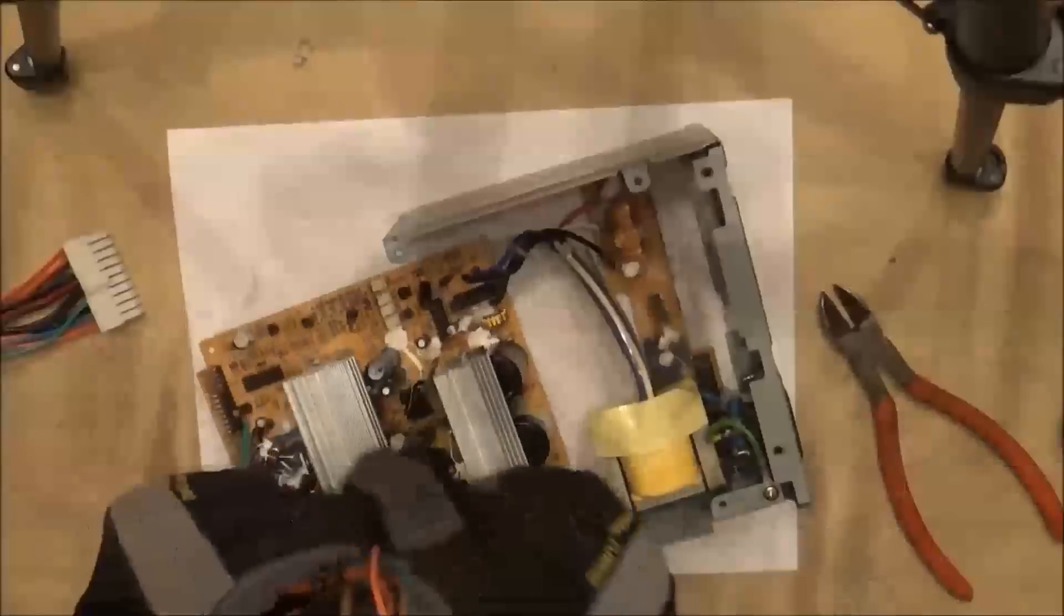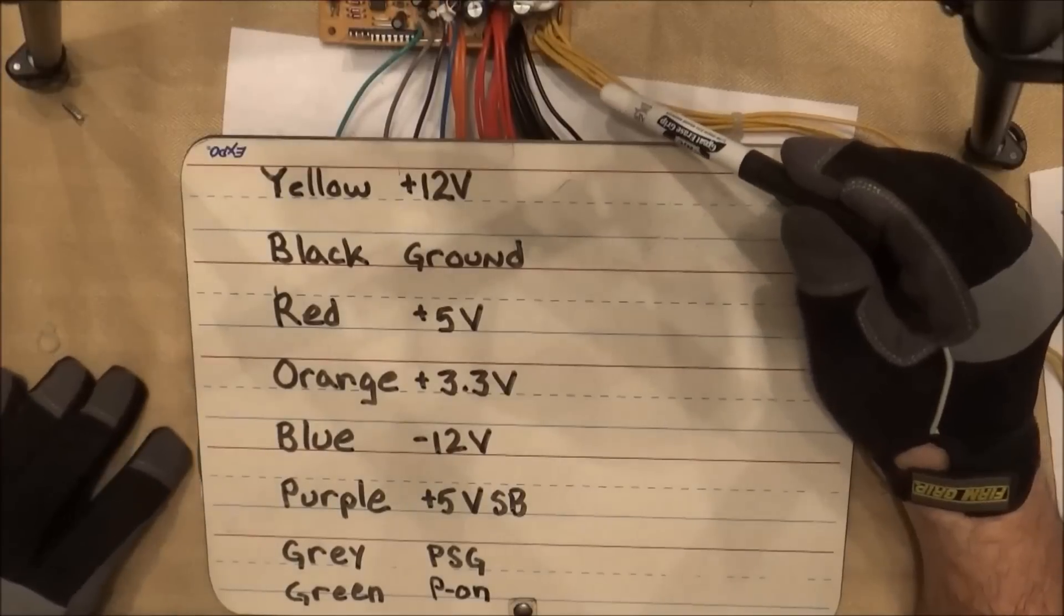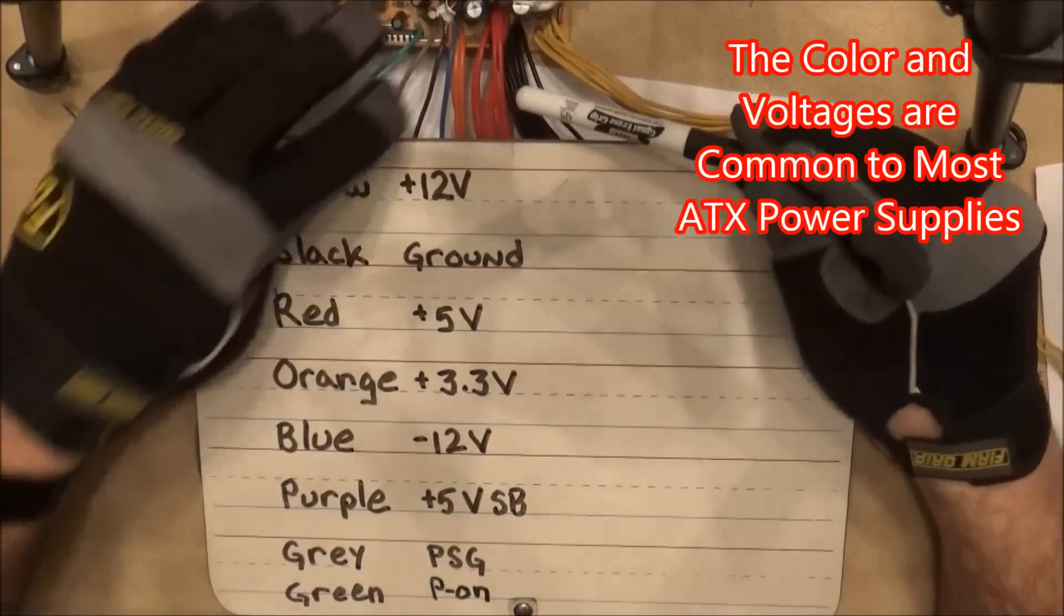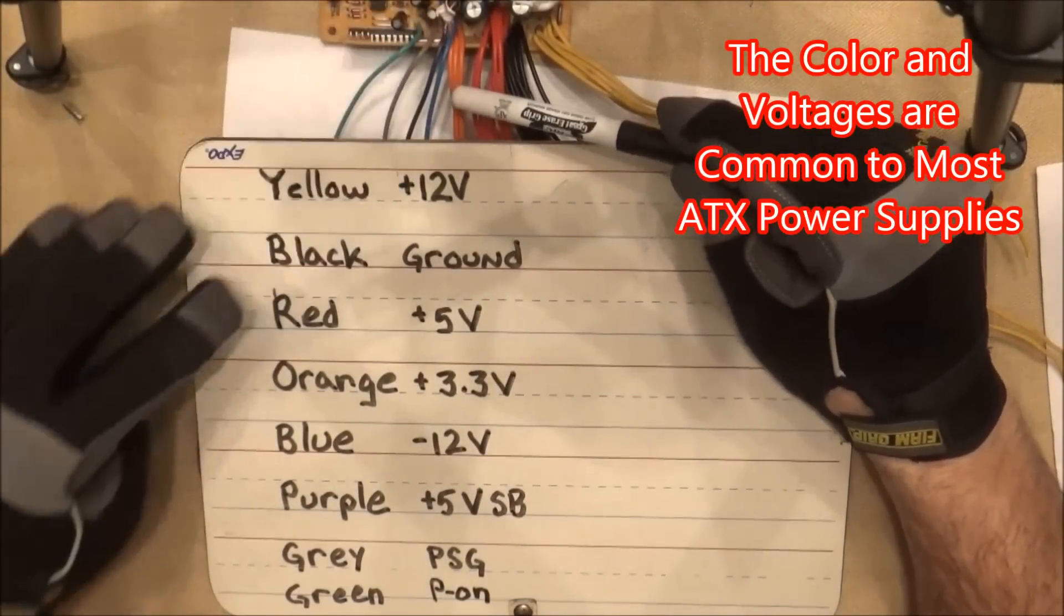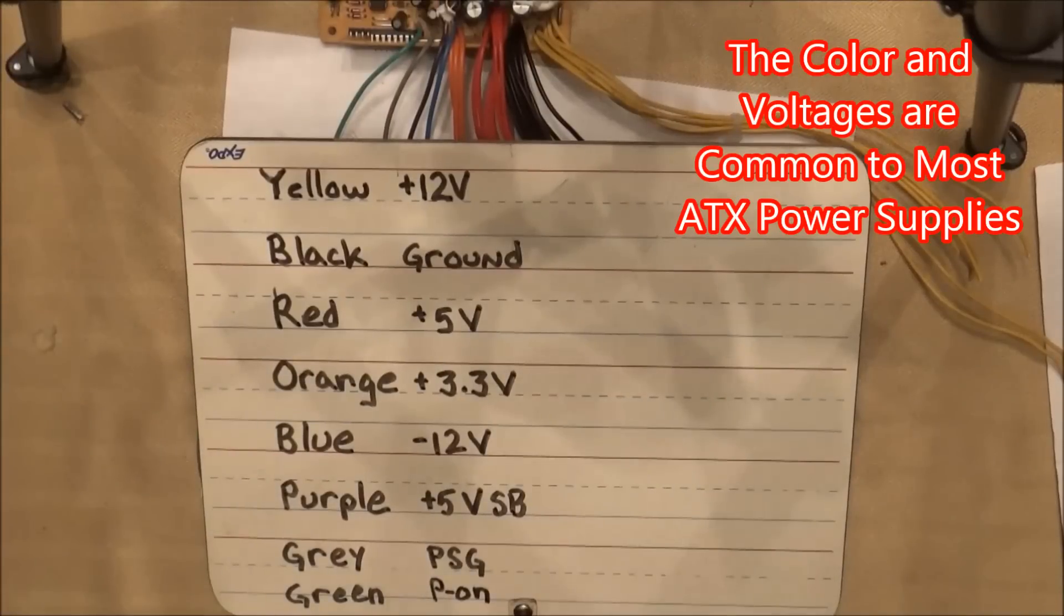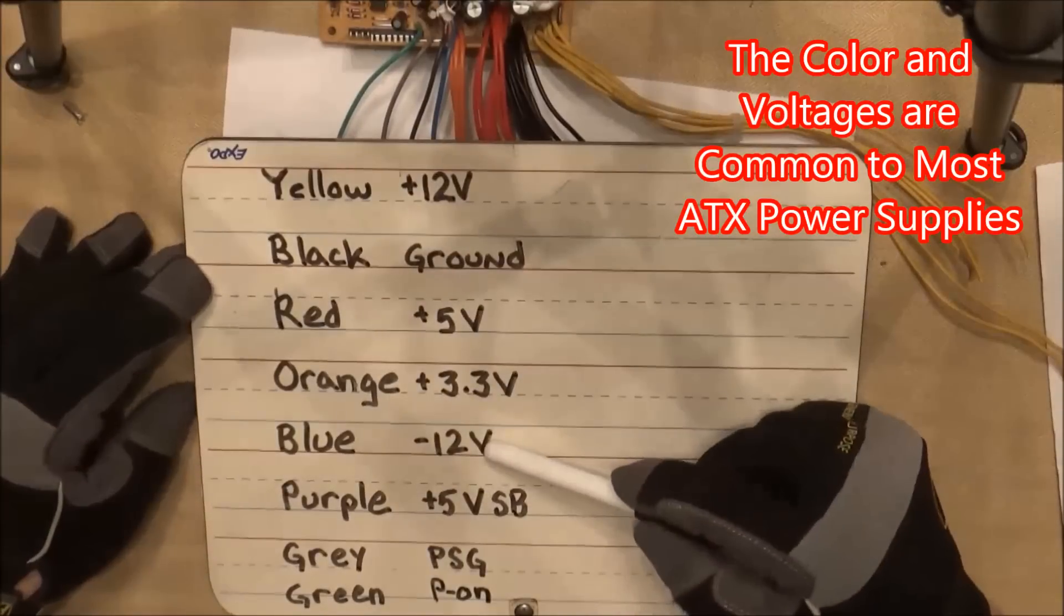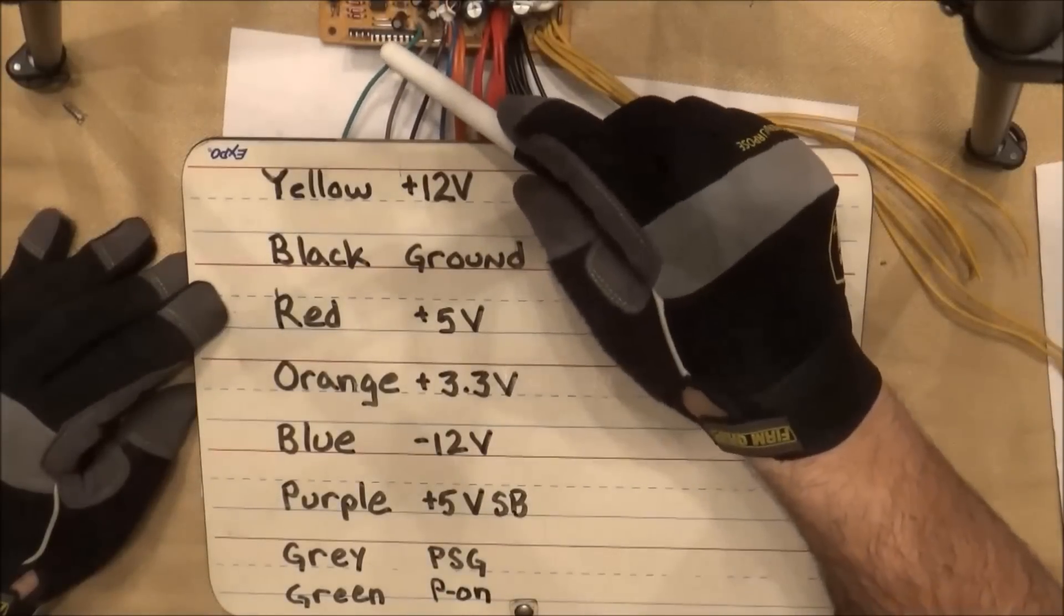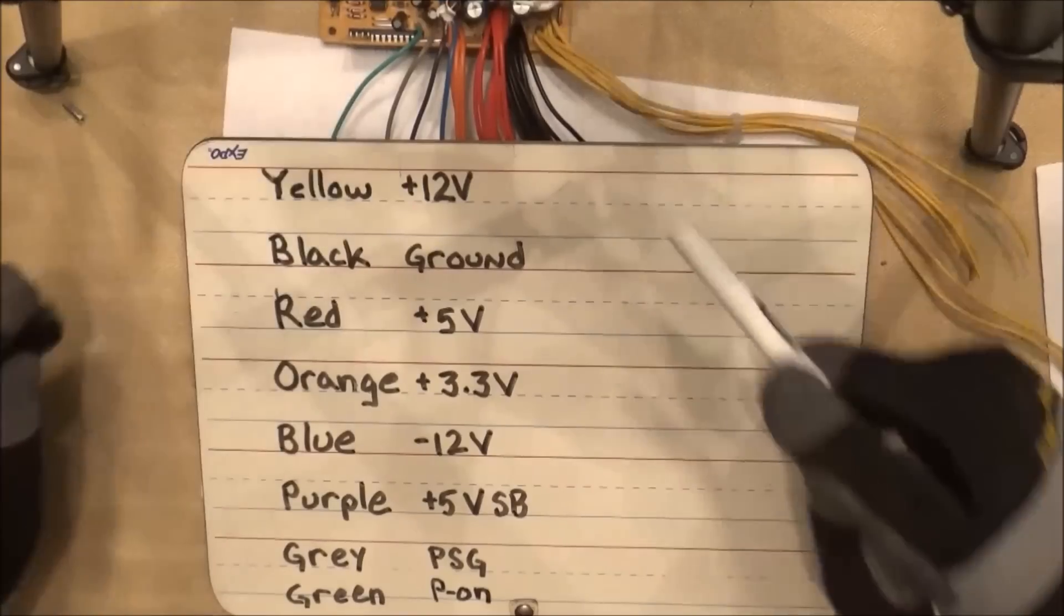These are some of the wires I disconnected. I separate the wires by color and find out that the colors match different voltages. Yellow is 12V positive, black is ground, red is 5V positive, orange is 3.3V positive, blue is 12V negative, gray is power supply good, green is power on. We'll use the green to hook to a switch to turn the power supply on. Purple is 5V standby, which we'll use later to install an LED.